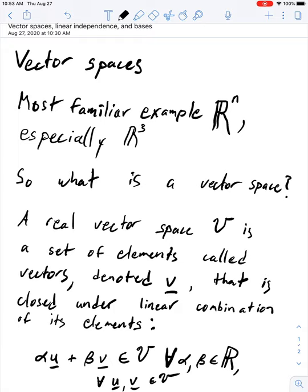So that means alpha u plus beta v is an element of V, is an element of. So this is the symbol here that I just wrote is an element of or is contained in the vector space V. And this is for all alpha and beta in the real numbers, for all u and v in V. So all that means is that if we have two elements in the vector space V, or any number of elements in the vector space V, as long as it's finite, then a linear combination of them is also a member of the vector space V.